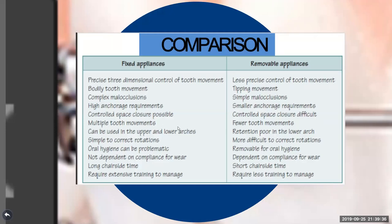Fixed appliances can be used in both upper and lower arches. Removable appliances in the lower arch are problematic due to retention issues caused by the inclination of the teeth and high undercut areas. Removable appliances are popular in the upper arch, but not in the lower. Controlling rotation is very difficult with removable appliances because for rotation correction we need a two-point contact area, which is possible with fixed appliances using a couple movement.